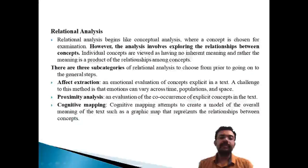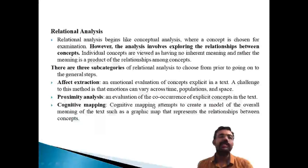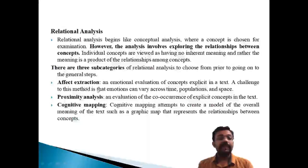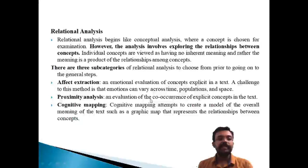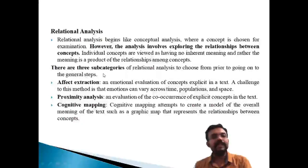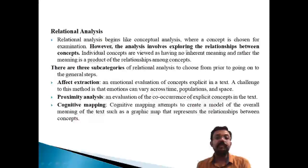The second subcategory is proximity analysis, which identifies explicit concepts within the text — looking at concepts that are explicitly stated. The third subcategory is cognitive mapping, which involves creating a model for the overall meaning of the text graphically. Cognitive mapping creates an overall model and shows relationships through a visual representation.